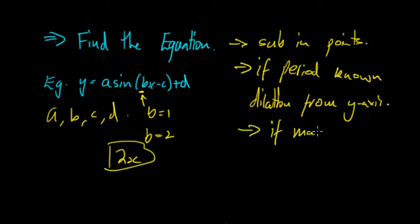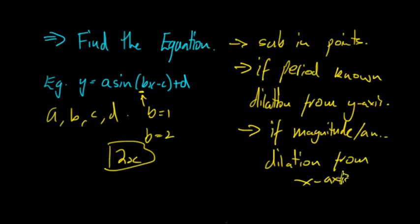Also if you know the magnitude or the amplitude, then you can work out dilation from the x axis. That's the number outside the trigonometric function. So if you know the magnitude is 1, then a would equal 1. If you knew the magnitude was, let's say, negative 4, therefore a would equal negative 4.